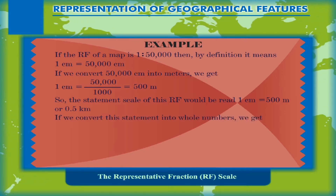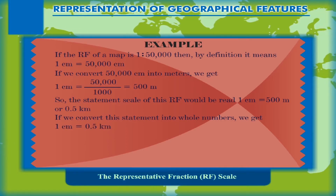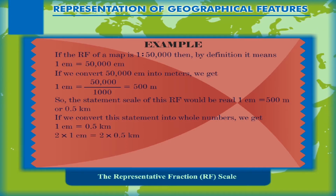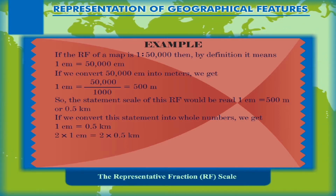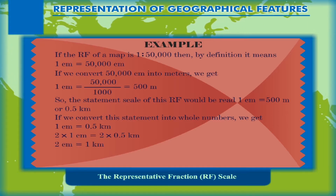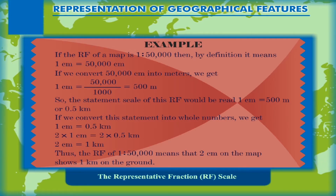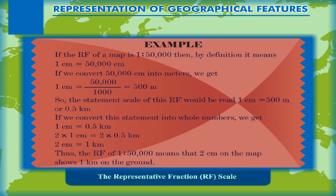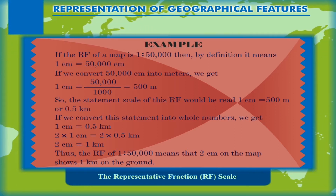If we convert this statement into whole numbers, we get: two centimeters is equal to one kilometer. Thus, the RF of 1:50,000 means that two centimeters on the map represents one kilometer on the ground.